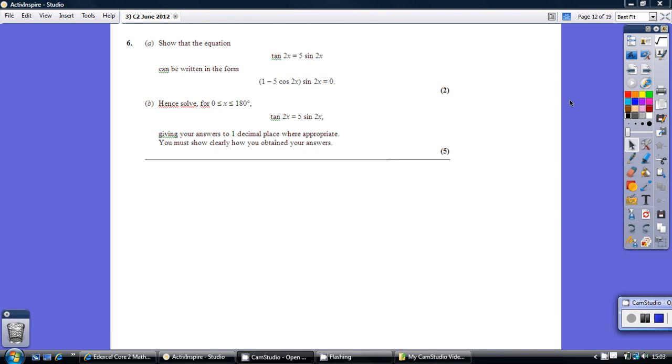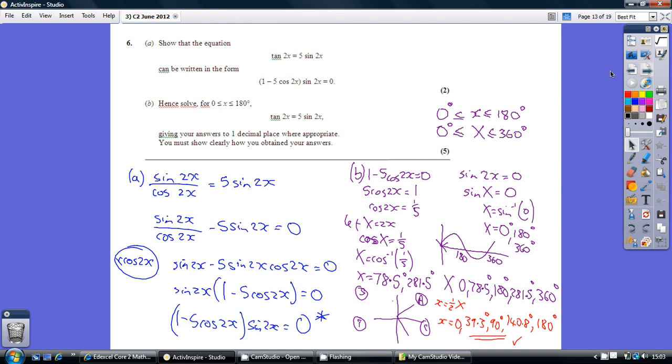Here's question 6, have a go. So, start off by replacing tan 2x by putting sine 2x over cos 2x. Remember sine over cos equals tan.